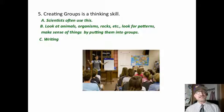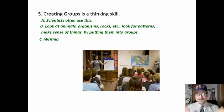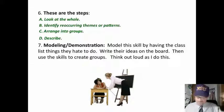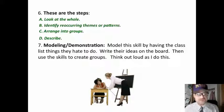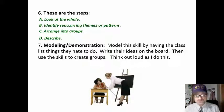Creating groups is a thinking skill. Scientists use this skill a lot — they look at animals, organisms, and patterns and put them in groups. Writers use this skill a lot too; they brainstorm ideas and then look for groups to write reports or do other things. Here are the steps: Step one, look at all the things you have. Step two, look for things that are the same — patterns or groups. Step three, arrange them into groups. Step four, describe the groups and the numbers within each group.